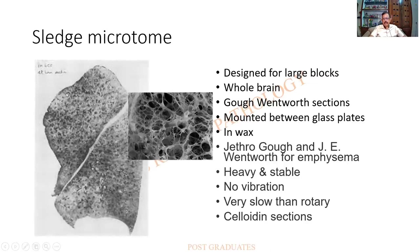The Gough-Wentworth sections — this will be asked in exams and you score a mark for mentioning it in emphysema. The instrument is designed for cutting very large blocks; the entire brain or the entire surface of the lung can be demonstrated. Such sections are mounted between two thin plates of glass. One such specimen is available in the JIPMER museum. The thickness is around 10 microns even for an entire lung section.